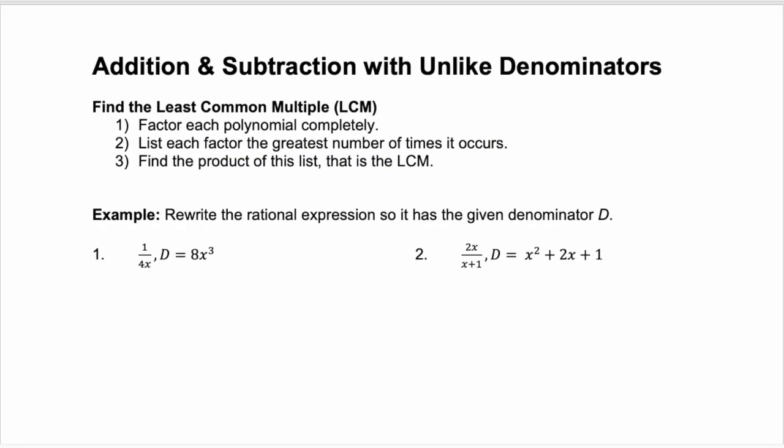Hey, everyone! Welcome back. Now that you know how to add and subtract rational expressions that have like denominators, let's look at what to do when they have unlike denominators. What we have to do is rewrite them with common denominators. To do that, you need to find the least common multiple. We have three steps here on how to find the least common multiple if it's not given to you.